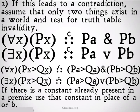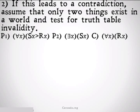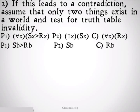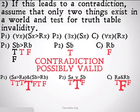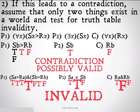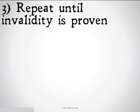Taking the argument that led to a contradiction with one object, if we assume two things exist and translate the argument accordingly, then assuming the premises are true and the conclusion false, we do not end up with a contradiction. So this is going to be an invalid argument. You then repeat this process until invalidity is proven — next with three objects, then four, and so on.